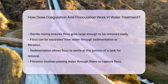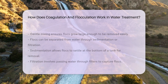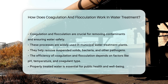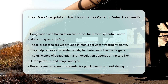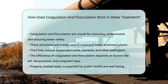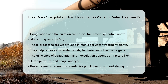Coagulation and flocculation are widely used in municipal water treatment plants. They help in removing not only suspended solids, but also bacteria and other pathogens, making the water safe for drinking and other uses. The efficiency of these processes depends on factors like pH, temperature, and the type of coagulants used. Properly treated water is essential for public health and well-being.